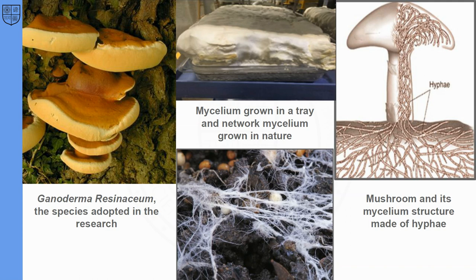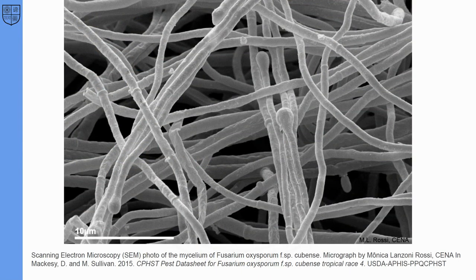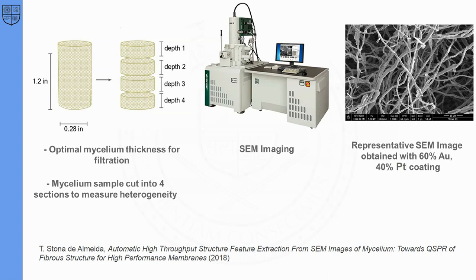Mycelium consists of microfibers made of biopolymers such as lipids, chitin, and glycoproteins. It can be used as a programmable biomaterial, substituting styrofoam in packaging, as leather, as architectural materials, and even food. The porous nature of the mycelium creates a mesh that resembles an open-cell foam structure. Being a natural microporous material, mycelium has great potential for applications in high-performance filtration membranes. The initial motivation of this study was to characterize the microstructure of mycelium with the application as a filtration membrane in mind, requiring an understanding of its porosity.